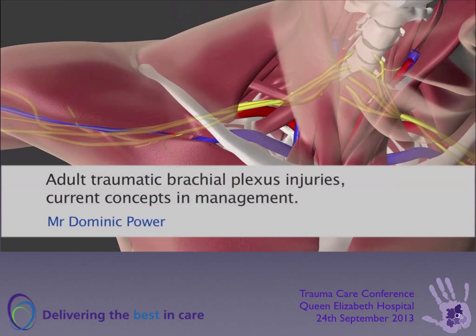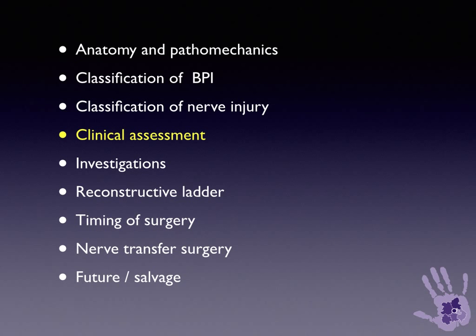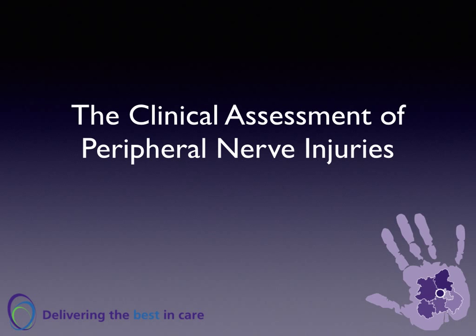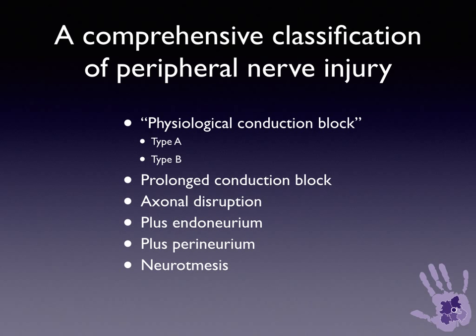We've previously talked about a number of topics in brachial plexus surgery. In the first talk we covered anatomy, pathomechanics, and classification of brachial plexus injury. Then there was a separate talk on classification of peripheral nerve injury, including brachial plexus. This talk is going to focus predominantly on the clinical assessment of peripheral nerve injury. To discuss clinical assessment, we need a classification system. A comprehensive classification includes conduction block, axonal disruption, and neurotmesis.